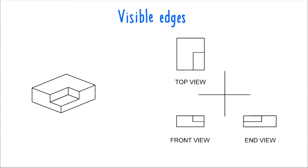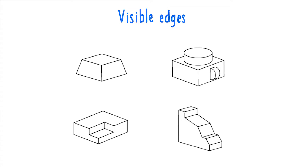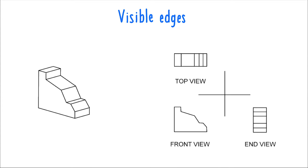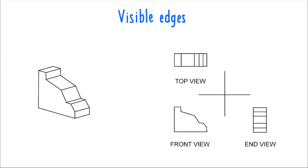You can then use those to determine the overall dimensions of the cutout from the top view. This fourth object is an example of a kind very common on the DAT — it has a very funky, detailed shape from one view, but from the other two views it has an overall simple rectangular shape with a lot of edges running across it. In these problems, they may ask you to use the main shape to determine the position of the various edges in the other two views.